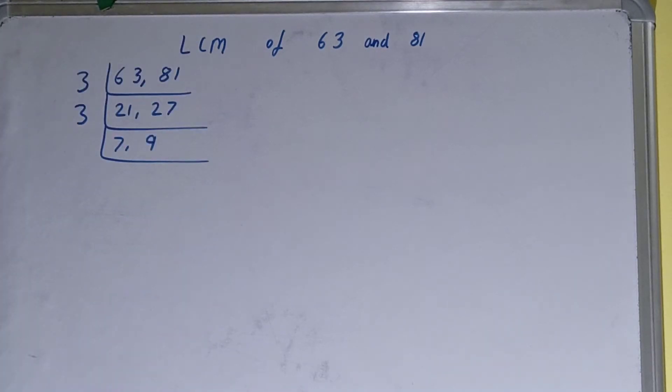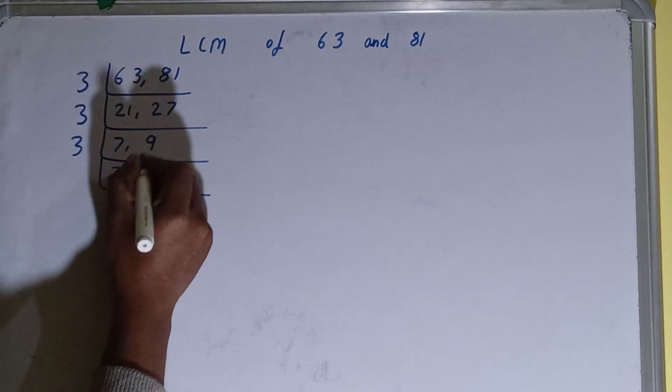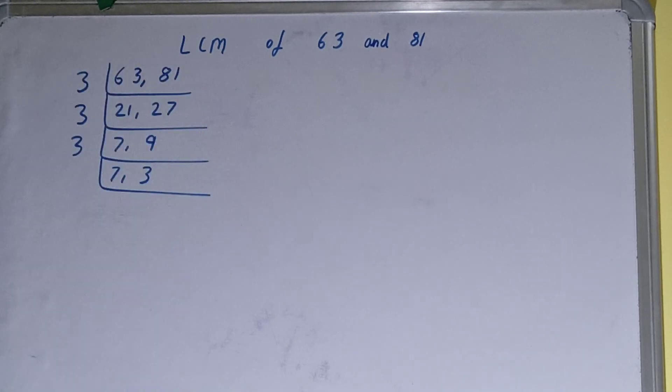Now if we check, then only the second number is divisible by 3, not the first one. So we'll divide only the second number and the first one will just copy it down. The second number will become 3.